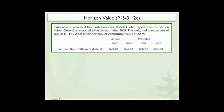Current and projected free cash flows for Radal Global Operations are shown below. Growth is expected to be constant after 2009. The weighted average cost of capital is 11%. What is the horizon or continuing value at 2009?